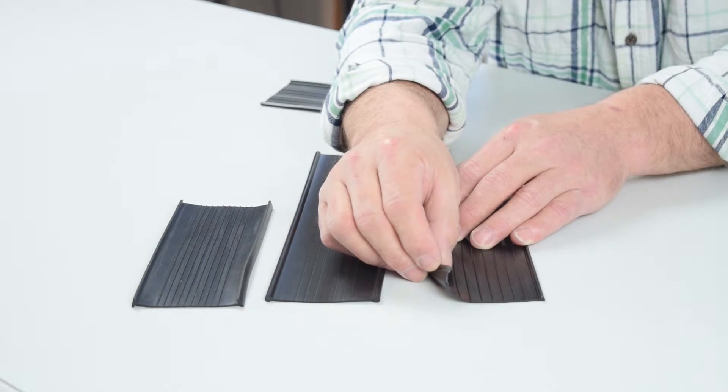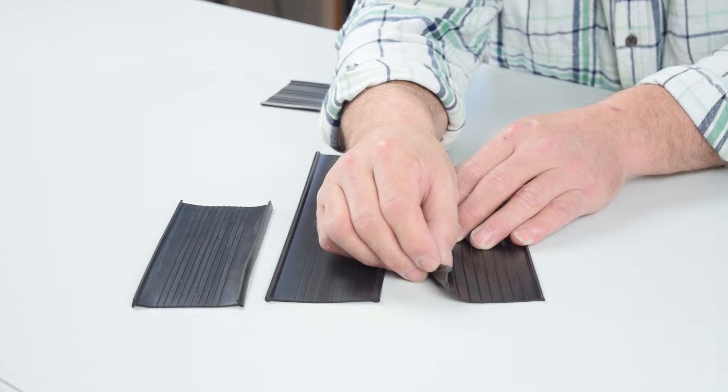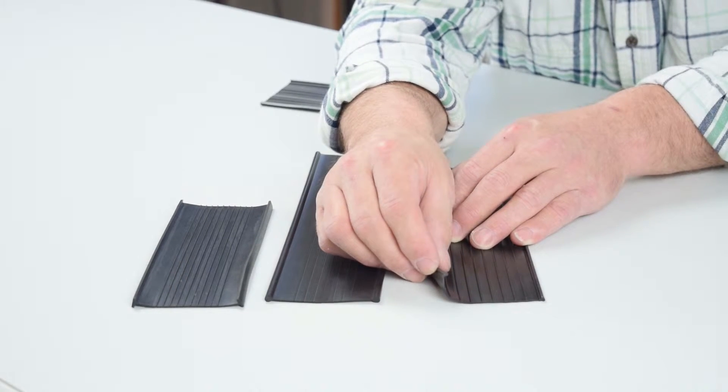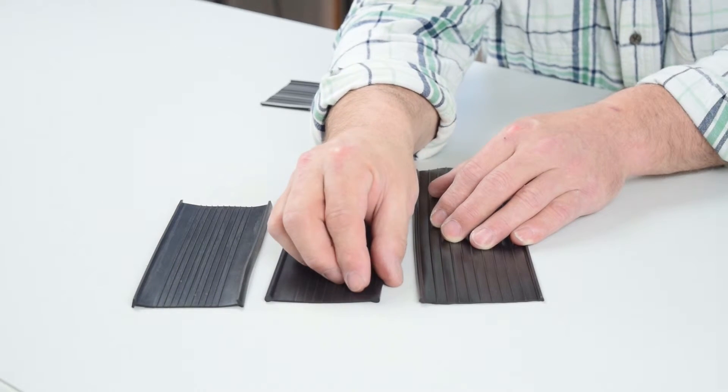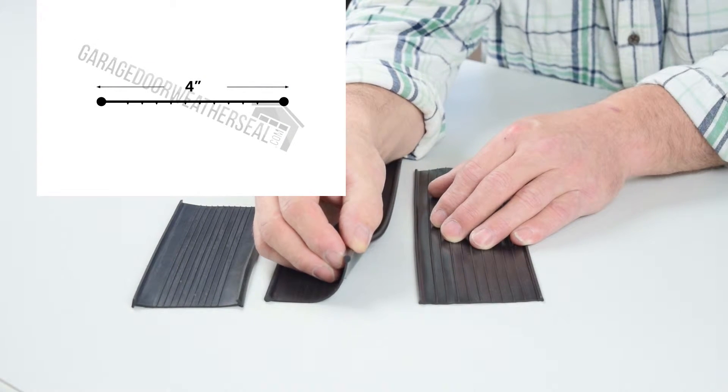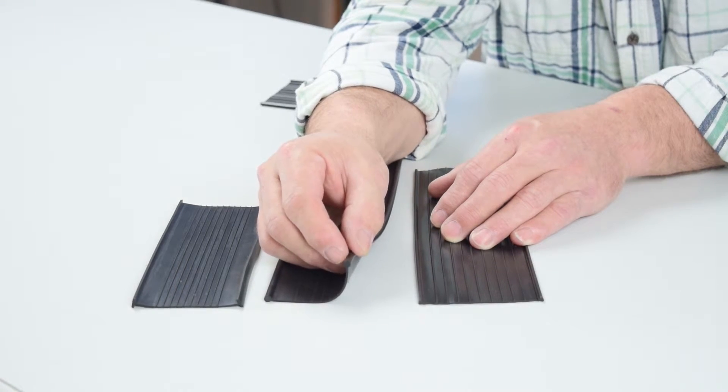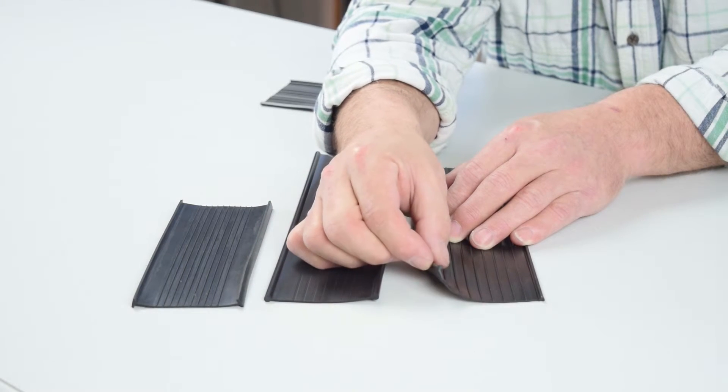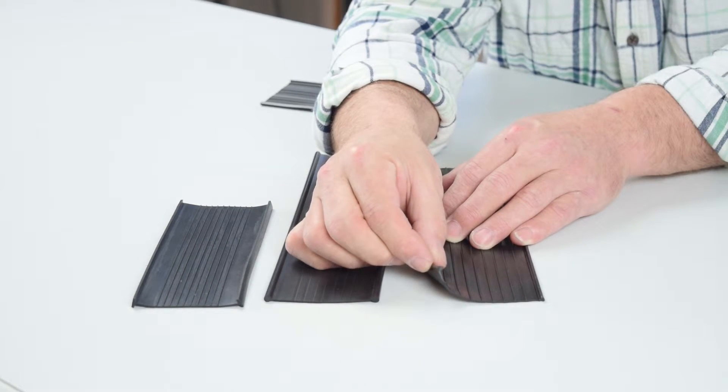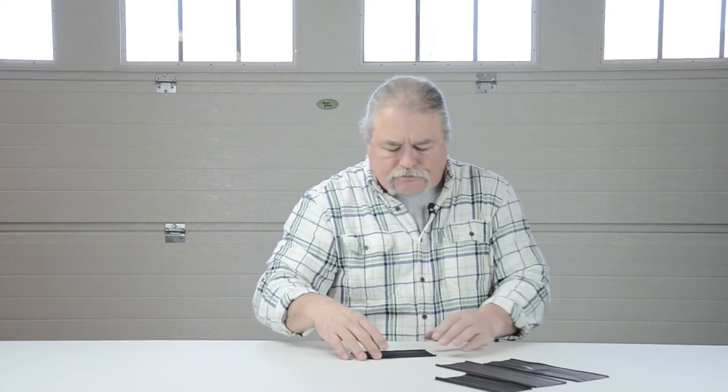We want to look at this particular seal here, the Wayne Dalton style weather seal. We get this directly from Wayne Dalton—this is the Wayne Dalton brand weather seal. This is a bead seal, fully round, three-sixteenths across. There are other beads that are fully round, maybe an eighth inch and a quarter inch. Wayne Dalton's seal, you can see, is not a bead seal. It's different—it's kind of like an oval.